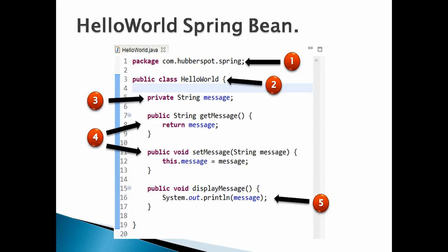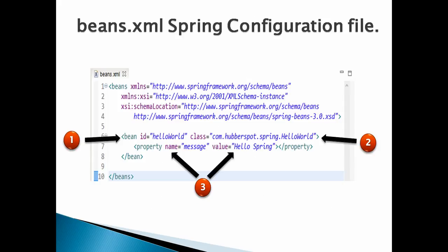Number 4: create getters and setters for the String 'message' instance variable. Number 5: create a method 'displayMessage' in the HelloWorld bean — this method, when called, will print the value held by the 'message' variable on the Java console.